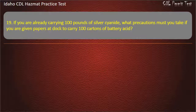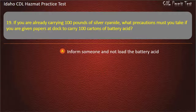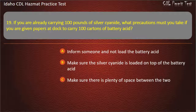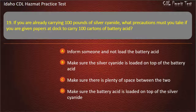Question 19. If you are already carrying 100 pounds of silver cyanide, what precautions must you take if you are given papers at the dock to carry 100 cartons of battery acid? Inform someone and not load the battery acid. Make sure the silver cyanide is loaded on top of the battery acid. Make sure there is plenty of space between the two. Make sure the battery acid is loaded on top of the silver cyanide. Answer: Inform someone and not load the battery acid.